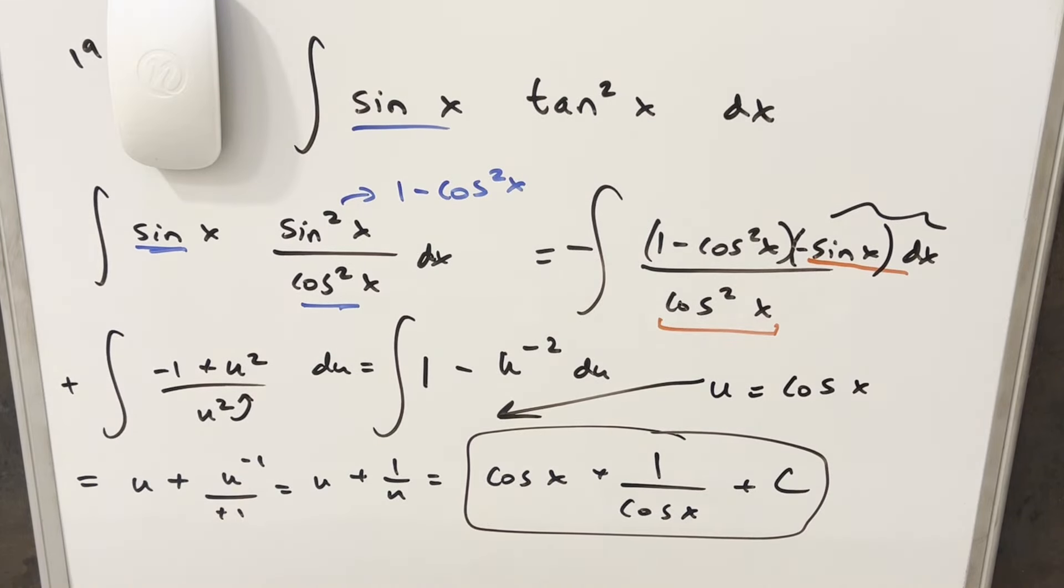We can back substitute to finish off with our u values. So for my final solution of this, we're just going to get cosine x plus 1 over cosine x, add a plus c, and that's it.